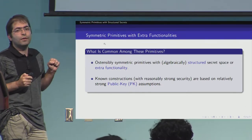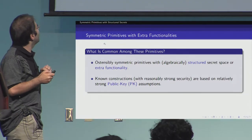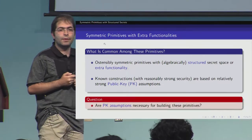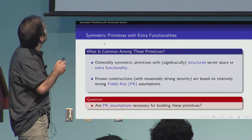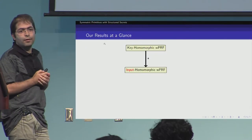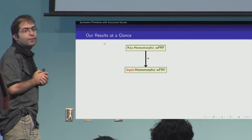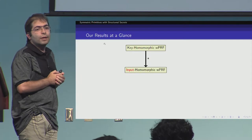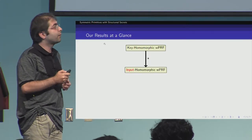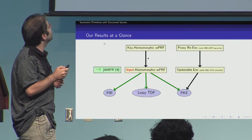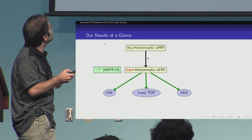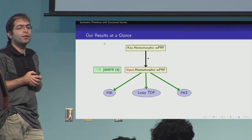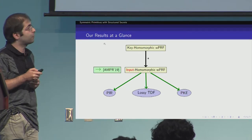The main question we study in this work is: are public key assumptions necessary for building these primitives? The answer is yes. We show that a keyhomomorphic weak PRF implies a certain primitive known as inputhomomorphic weak PRF, which has recently been shown to imply a bunch of primitives such as PIR (private information retrieval), trapdoor functions, and of course public key encryption.